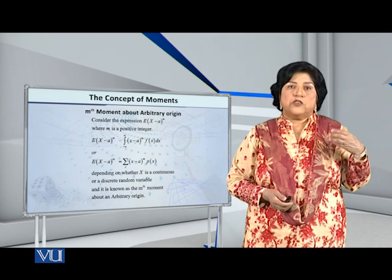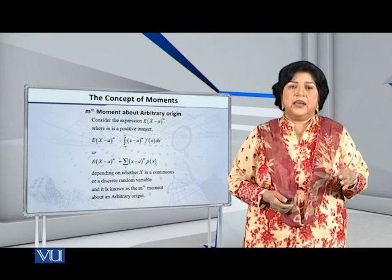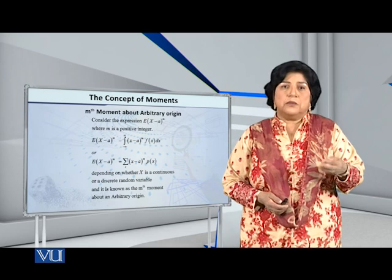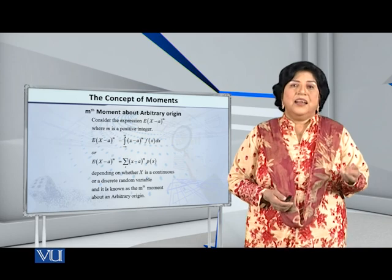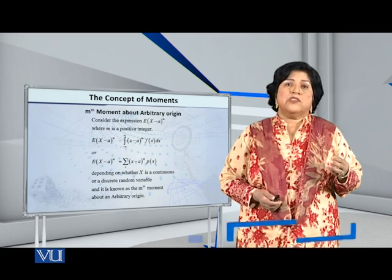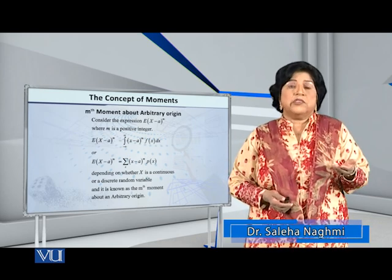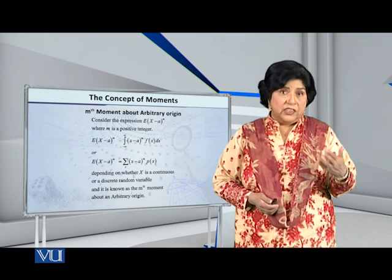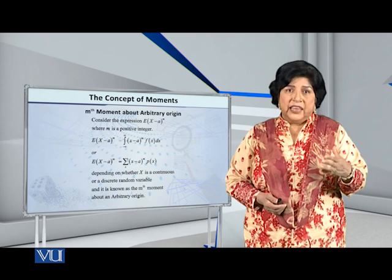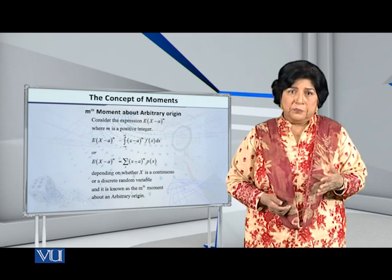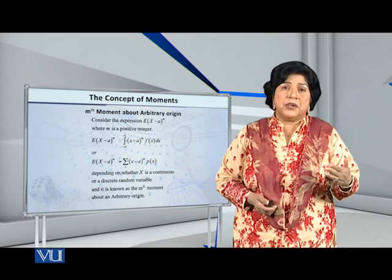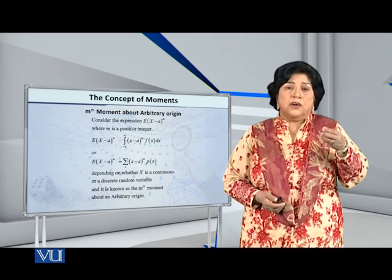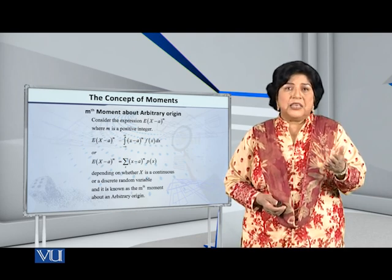Consider the expression: expected value of (x minus a) raised to m, where m is a positive integer and a is any arbitrary real number. If we are dealing with a continuous variable, this expectation will be given by the integral from minus infinity to infinity of (x minus a) whole raised to m, multiplied by f of x. On the other hand, if we are talking about a discrete variable, then this expectation is given by the summation of (x minus a) raised to m, multiplied by p of x.